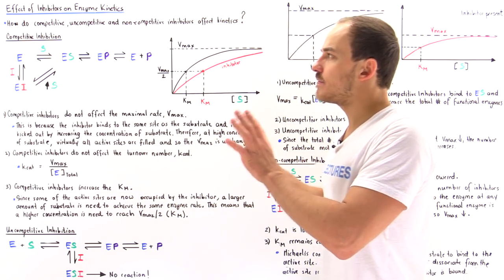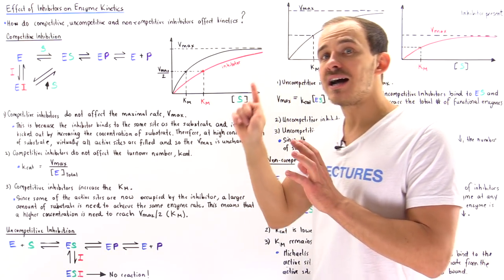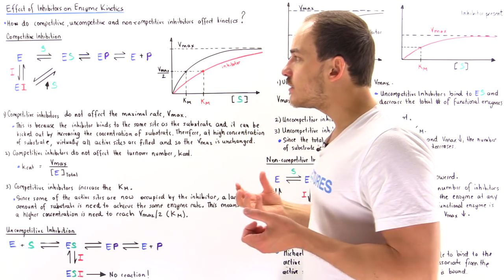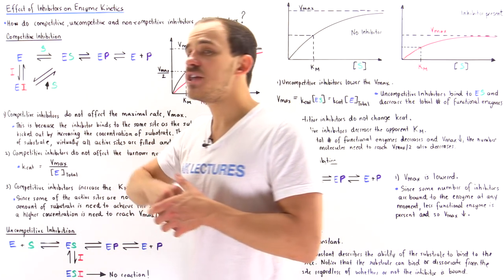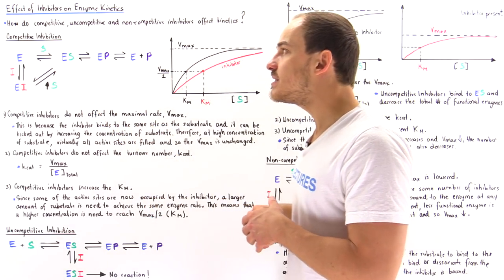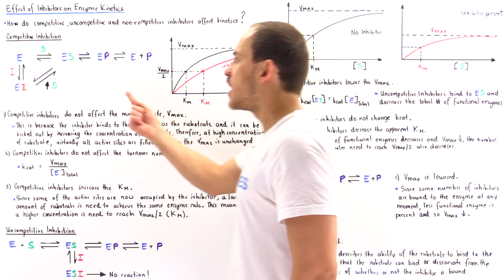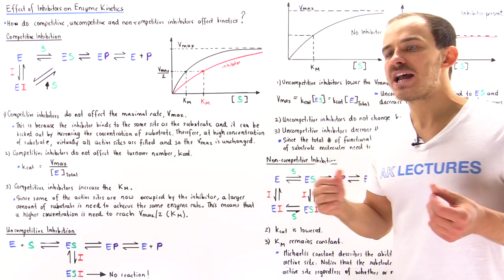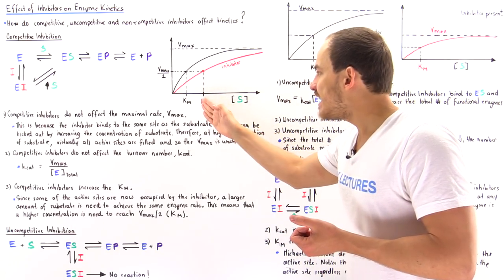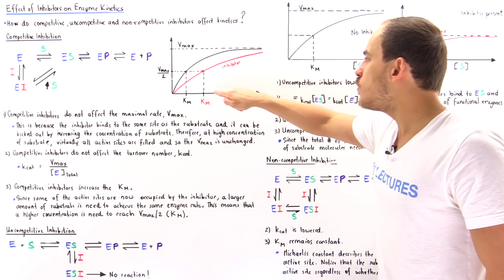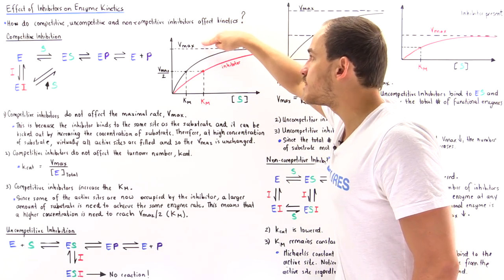Now the key thing about competitive inhibition is that because the substrate binds to the same exact region as the inhibitor, if we increase the concentration of the substrate there is a greater likelihood that the substrate is going to collide into the active site. That can displace and replace the inhibitor in the active site to reform the enzyme-substrate complex. So examining the red curve, which describes the presence of the inhibitor, if we increase the concentration of S and move to the right along the x-axis, eventually the red curve reaches the same Vmax value as the black curve.